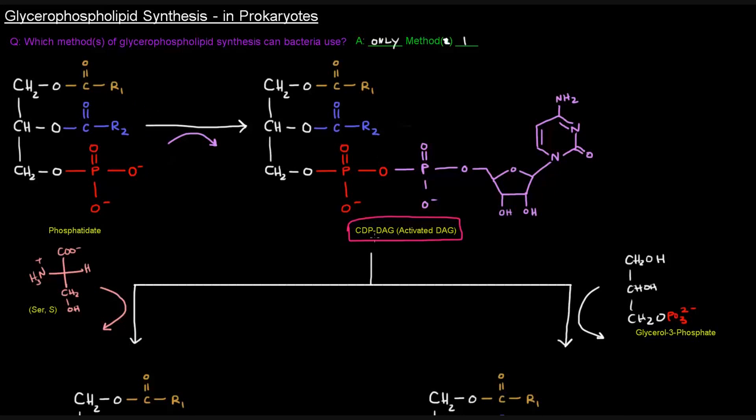Now, how did we get this? We mentioned that we started with phosphatidate, and we added to it a CTP, and then a pyrophosphate came off to give us the CDPDAG. What exactly is happening here? Well, phosphatidate already has this phosphate group, and we're adding this purple portion here that's coming from CTP.